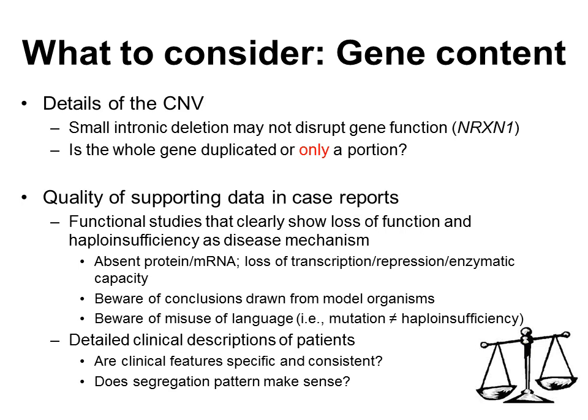Some CNVs may involve a portion of a clinically relevant gene yet still not disrupt the gene function, such as the example of a deletion in the neurexin1 gene that's located within an intron. Similarly, for a duplication, one needs to consider if the whole gene is duplicated, or does the duplicated region only partially overlap a gene? A duplication that partially overlaps a gene or is contained completely within a gene could possibly disrupt the gene's function and actually cause loss of function. This consideration of the details of the CNV in relation to the gene in question helps one think accurately about the possible disease mechanisms that one may need to be concerned with.